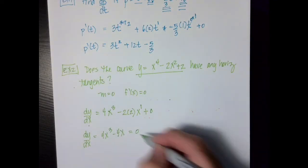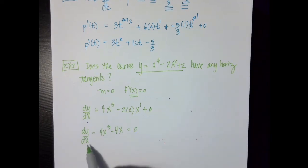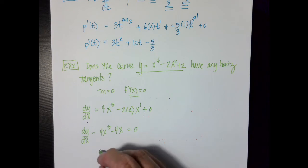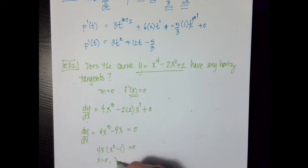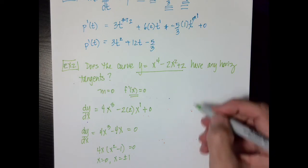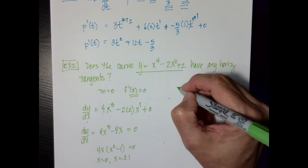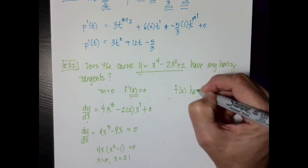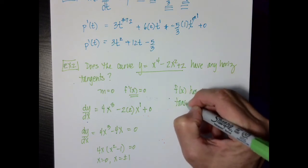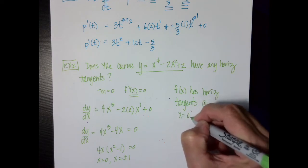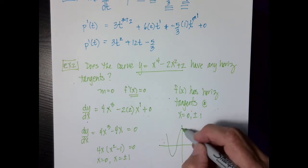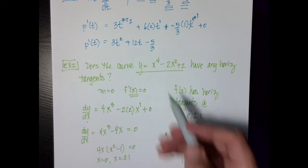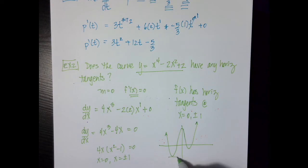Setting that equal to zero: 4x cubed minus 4x equals zero. Solving by factoring, I take out 4x and get x squared minus 1 equals zero. So x equals zero and x equals plus or minus 1. The curve has horizontal tangents at x equals 0 and plus or minus 1. If you graph this fourth-degree curve in your calculator it looks something like a W shape, and you can see the three horizontal tangents.